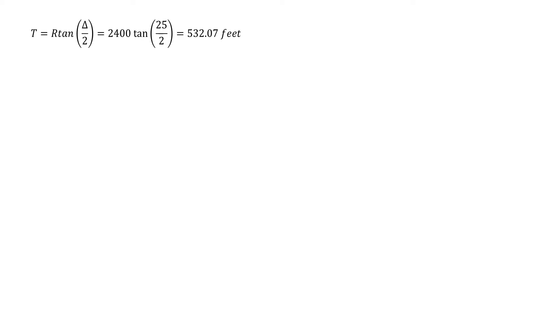So we're going to start with some basic calculations. First our tangent length is 532.07 feet. That allows us to calculate the station of the PC, which is subtracting the tangent length from our PI station that was given. So that's a PC station of 232 plus 80.81.